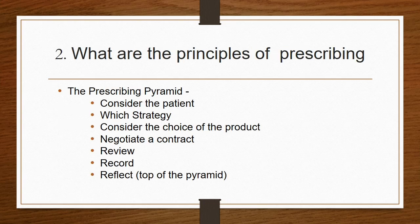The next question is: what are the principles of prescribing? It's asking about the prescribing pyramid — what are the principles of the prescribing pyramid? There are seven points: consider the patient, which strategy, consider the choice of the product, negotiate a contract, review, record and reflect. You need to write all of that.